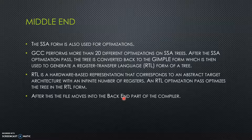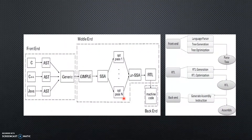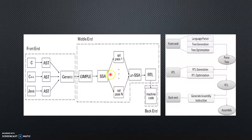After optimizations, the trees are converted back into GIMPL form, which is then used to generate an RTL form of a tree. RTL stands for Register Transfer Language. RTL is a hardware-based representation that corresponds to an abstract target architecture with an infinite number of registers. After this, the file moves into the back-end of the compiler. The Generic form is converted into GIMPL, then into SSA form where optimizations occur, and finally into an RTL form which is sent over to the machine code.